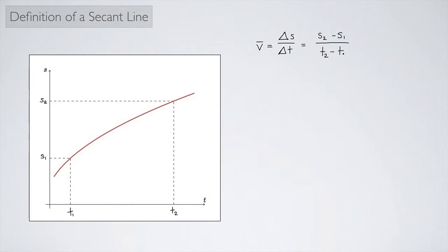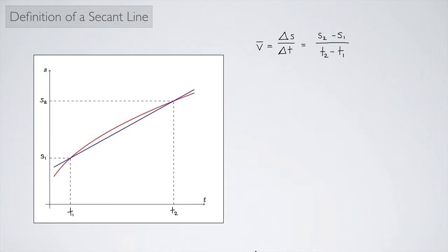And this might look familiar. This kind of looks like you're calculating a slope and it would be the slope of this blue line right here. And in fact that's true. The average velocity equals the slope of the secant line.